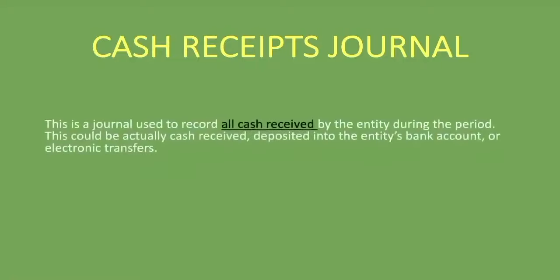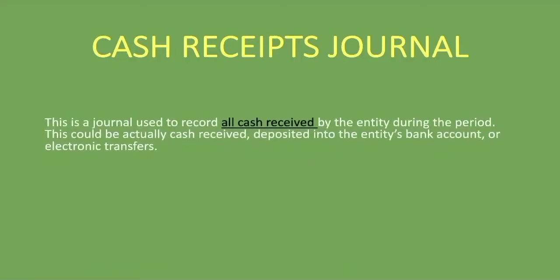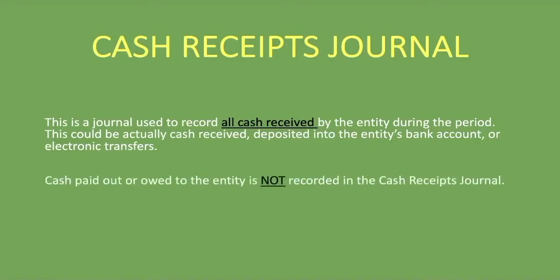So what is the cash receipts journal? This is a journal used to record all cash received by the entity during the period. This could be actual cash received, deposited into the entity's bank account, or electronic transfers. It's all cash received by the entity regardless of purpose — cash paid out or owed to the entity is not recorded in the cash receipts journal.